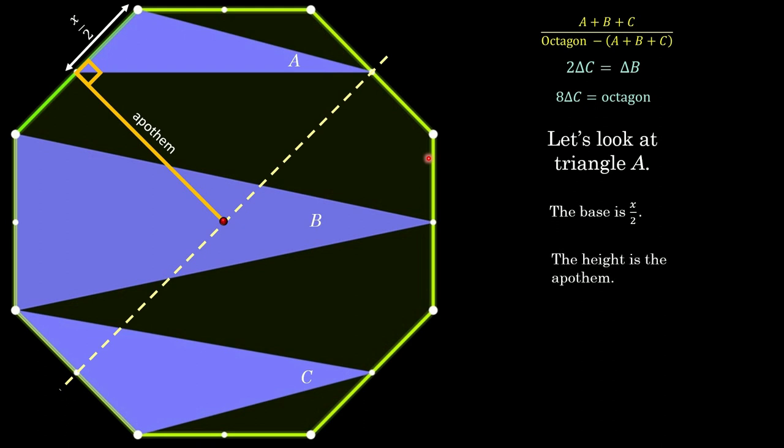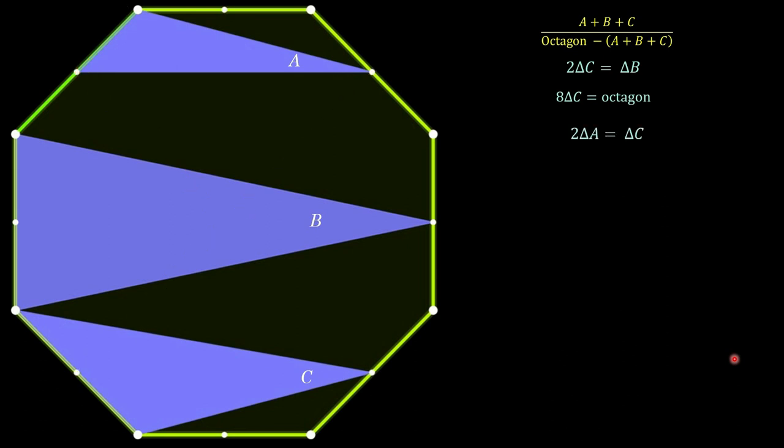So what we have is we have for triangle A, we have one half base times height. The base is half of X in the apothem. So if we clean that up, that would be X over 4 times the apothem. Now since C is X over 2 times the apothem, then we know that C is twice as big as A. So 2A equals C. So let's go ahead and put that up there where we can use it right here. All right. So now we've got all of the pieces of information. We've got an expression for C, B, and A, as well as the entire octagon.